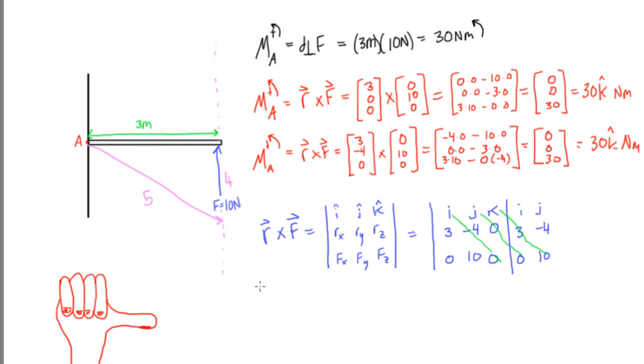So we will get r×f is equal to i times -4 times 0 plus j times 0 times 0 plus k times 3 times 10 minus, and then you come back and do these three diagonals the other way. So we have minus j times 3 times 0 minus i times 0 times 10 minus k times -4 times 0. You're going to see that all of these are going to go to 0 except for one of the terms, so we're going to have r cross f is equal to 30k hat, and these units would be newton meters.